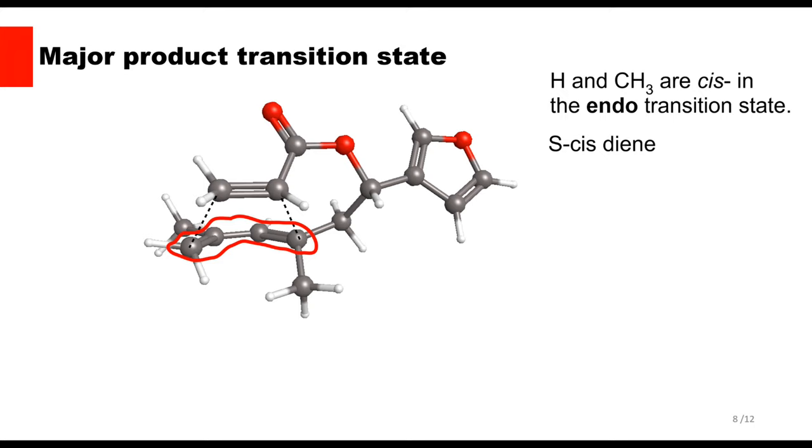Third, the E configuration of the diene already exists in the biosynthetic precursor, geranyl diphosphate. Fourth, the dienophile adopts the S-cis conformation, which is about 5 kcal per mole more stable than the S-trans conformation.